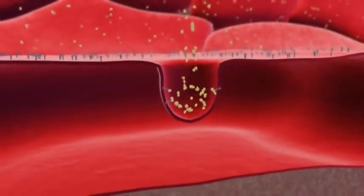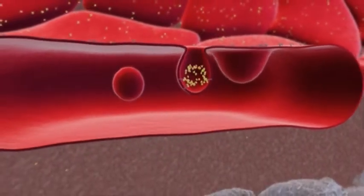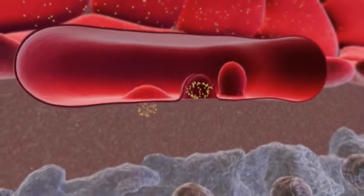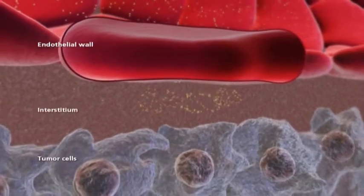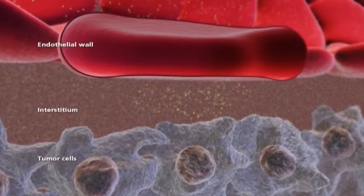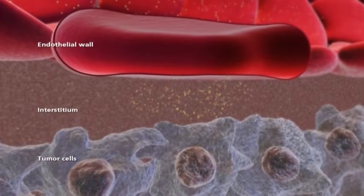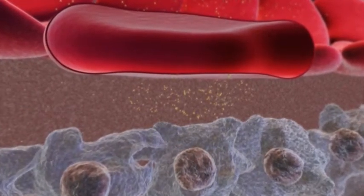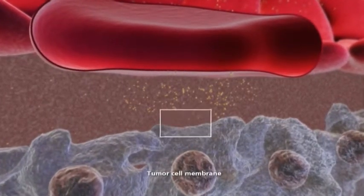The caveolae then transport their cargo, albumin loaded with cytotoxic agent, to the tumor's interstitium where it is trapped. For the cytotoxic drug to be maximally effective, it must traverse one last barrier, the tumor cell membrane.